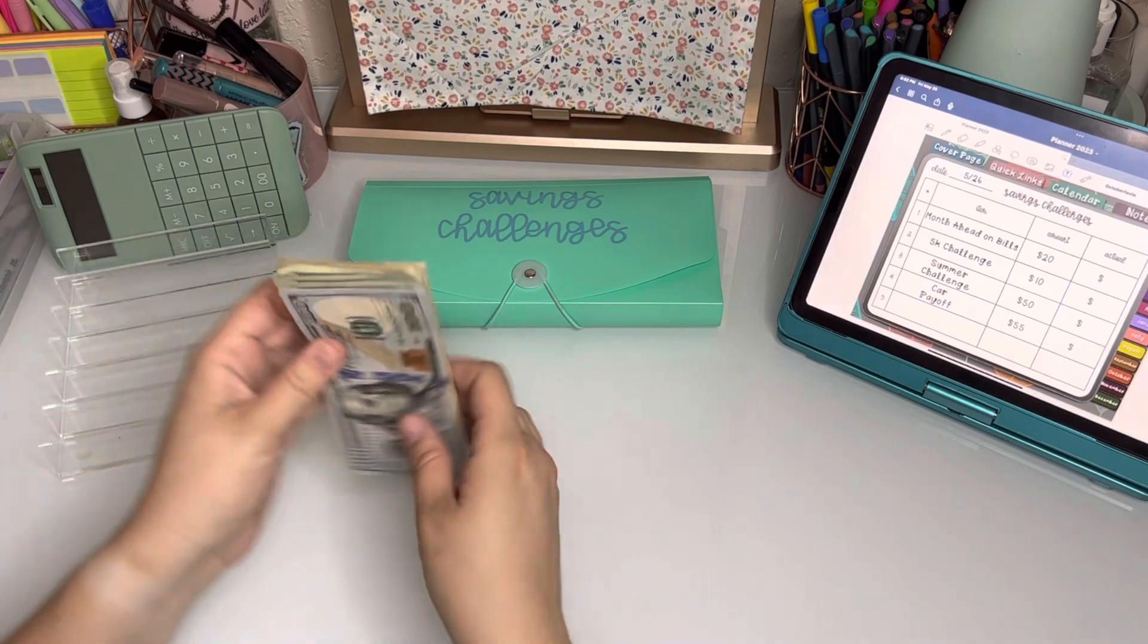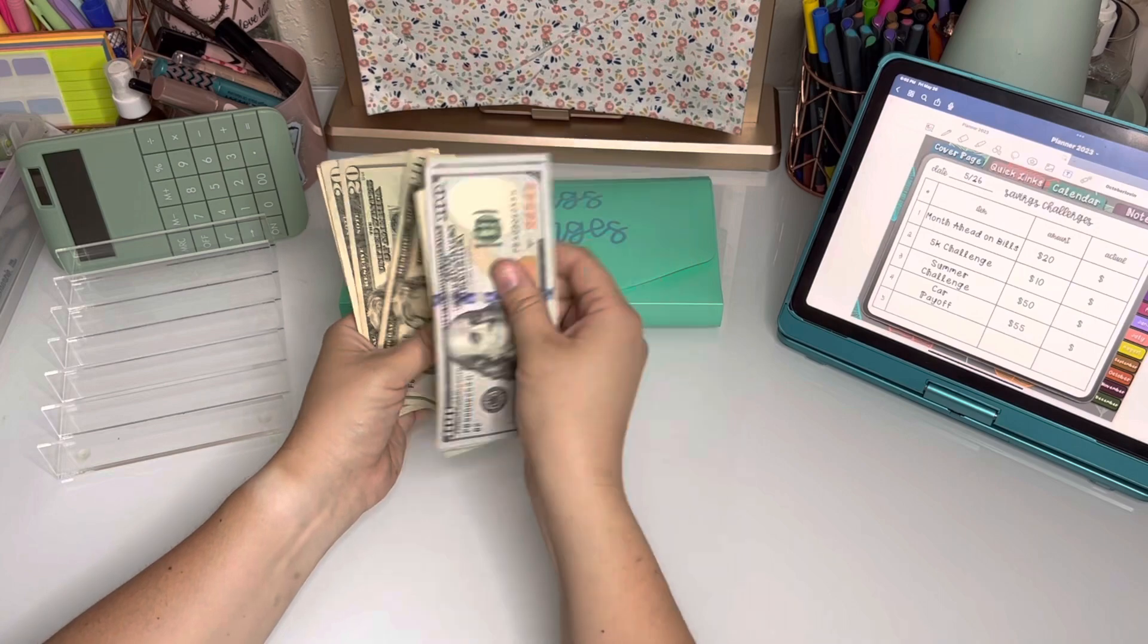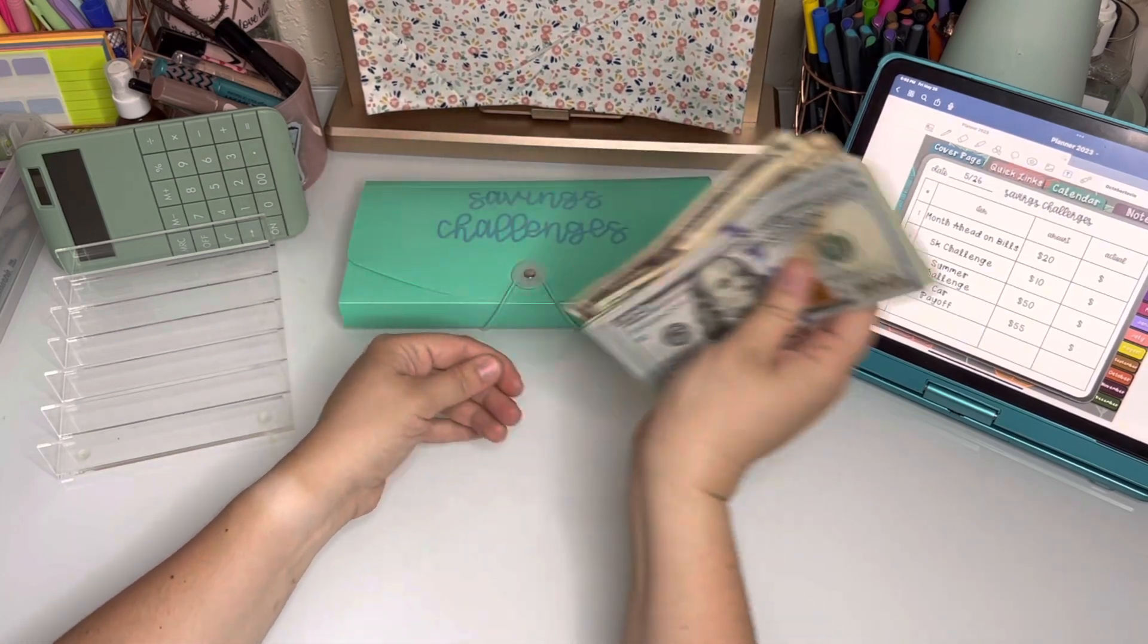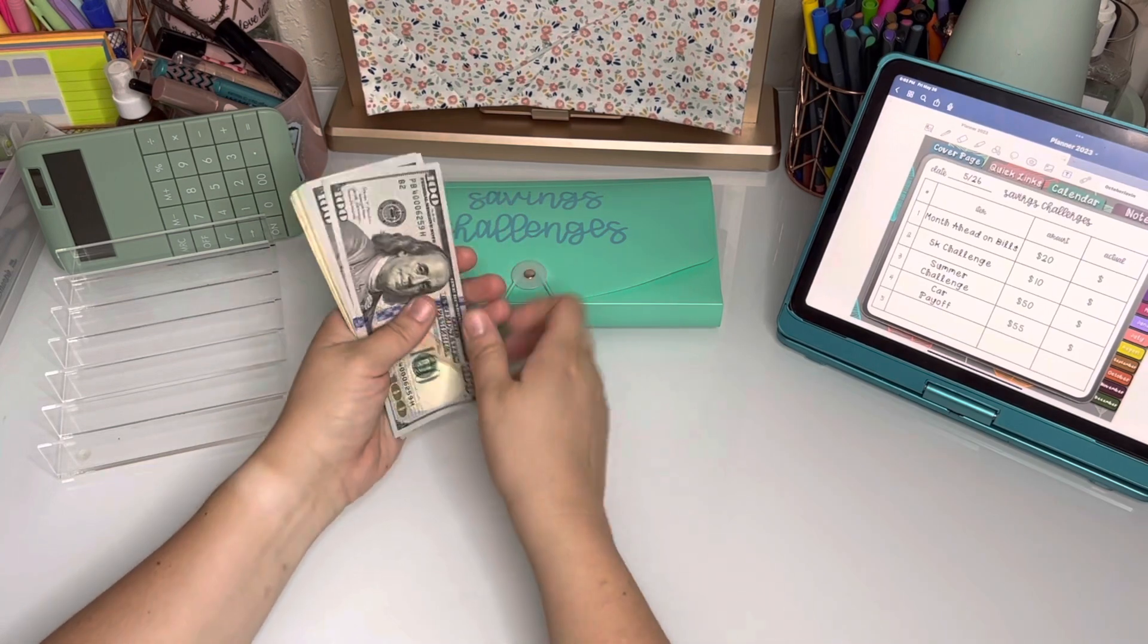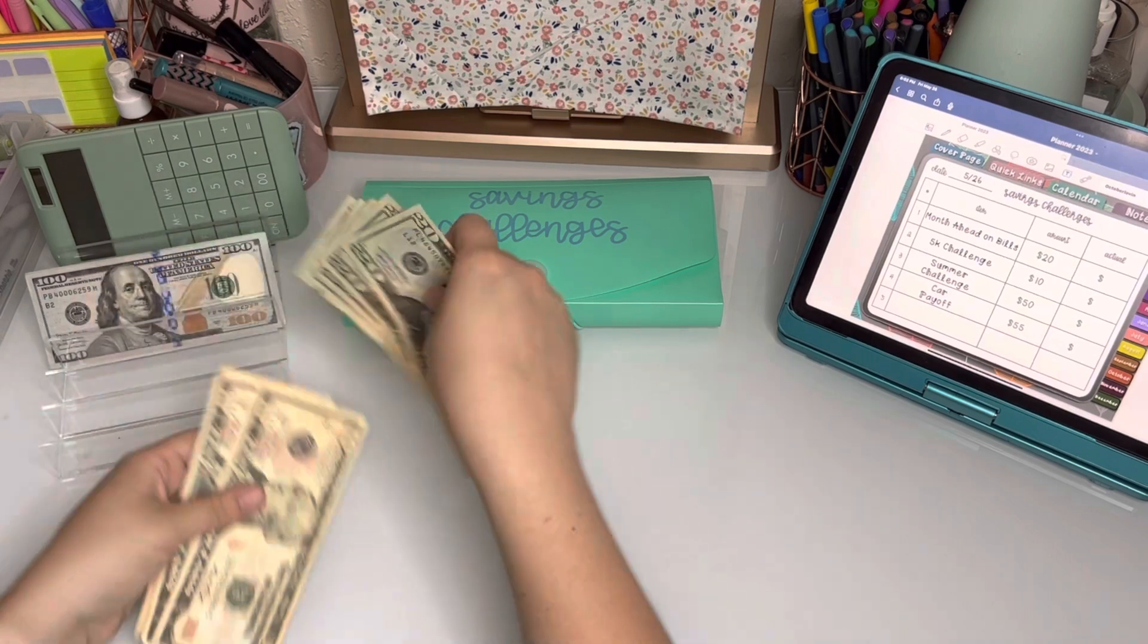So let's see how much we are stuffing. [counts money] $455, and obviously a big chunk of this is going to go to the car, but that's really exciting.